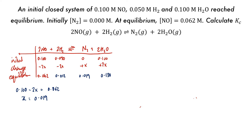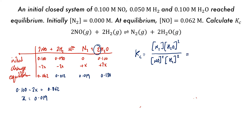The next step is to form our equilibrium constant expression. Kc equals products over reactants: the concentration of N2 times the square of the concentration of H2O, because there's a stoichiometric coefficient of 2, all over the concentration of NO squared times the concentration of H2 squared. That equals 0.019 times 0.138 squared, all over 0.062 squared times 0.012 squared.